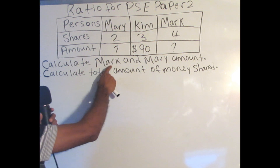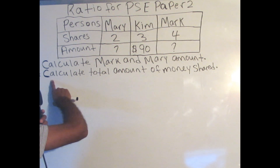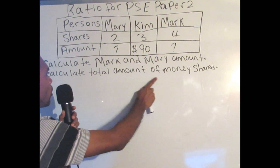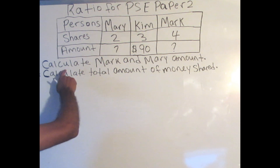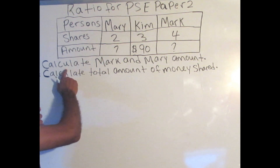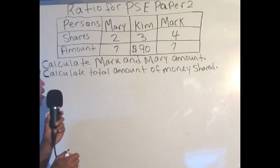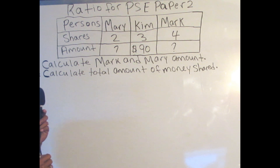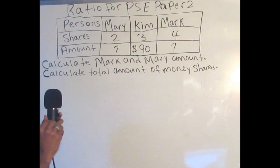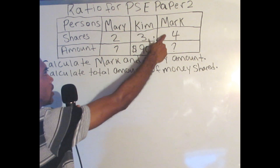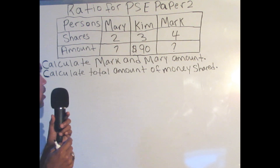Question A says: calculate Mark and Mary's amount. Question B says: calculate the total amount of money shared. For question A, in order for us to calculate how much Mark and Mary receive, we'll work them one by one, starting with Mark, then we go to Mary.